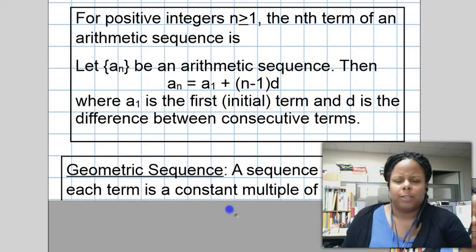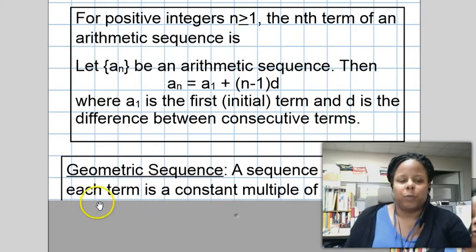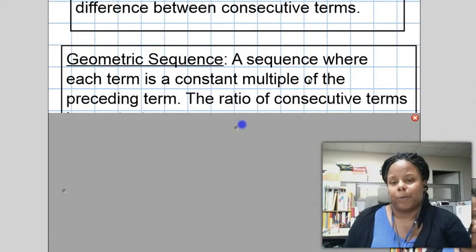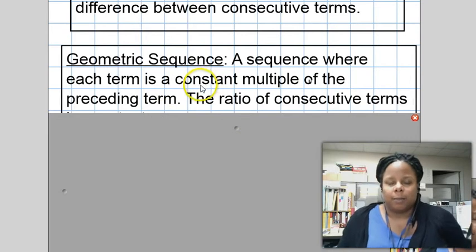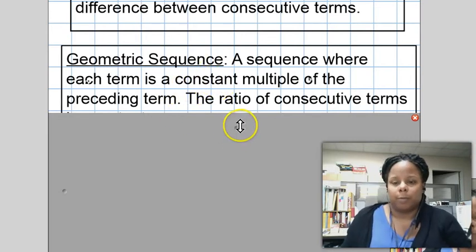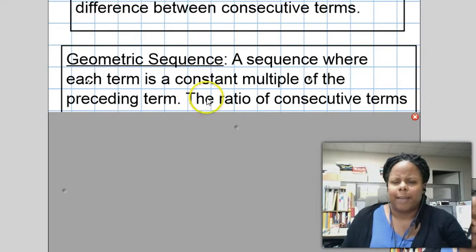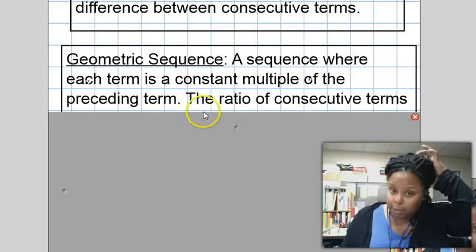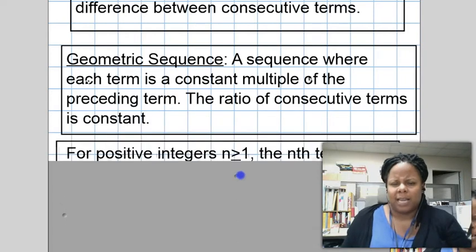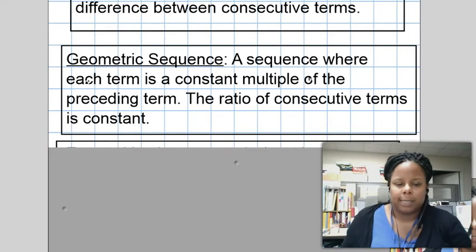A geometric sequence is a sequence that each term is a constant multiple of the preceding terms. And instead of adding the preceding term to get the next term, you multiply it. And so to figure out that common constant multiple, we take the ratio of consecutive terms. And that would be the common multiple. So let's take a look at an example of that.